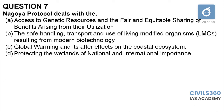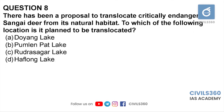Question number seven: Nagoya Protocol deals with — A: access to genetic resources and fair and equitable sharing of benefits arising from their utilization, B: the safe handling, transport, and use of living modified organisms resulting from modern technology, C: global warming and its effects on ecosystems, D: protecting wetlands of national and international importance. The Nagoya Protocol on access to genetic resources and fair and equitable sharing of benefits is a supplementary convention of the CBD, the Convention on Biological Diversity. Therefore the answer is option A.